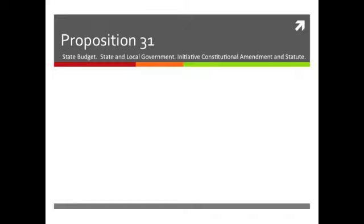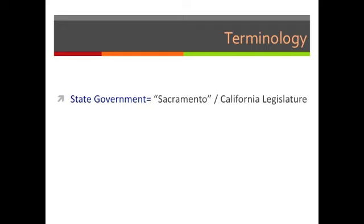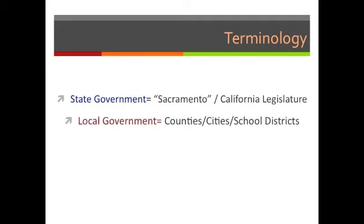Proposition 31: State Budget, State and Local Government Initiative, Constitutional Amendment and Statute. Before I start, let me clarify that the term 'state government' refers to Sacramento — the California state legislature. The term 'local government' refers to county and city governments, such as Los Angeles County, the San Francisco city government, or the Fresno School District.